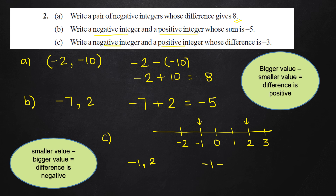So let's take minus 1 and 2. The difference is negative, meaning I subtract the bigger value from the smaller value: minus 1 minus 2 gives minus 3. One more answer: if I pick minus 2, I'll pick 1. So minus 2 and 1 — again subtracting the bigger value from the smaller value so the difference is negative. This is how we solve exercise 1.2, question number 2.